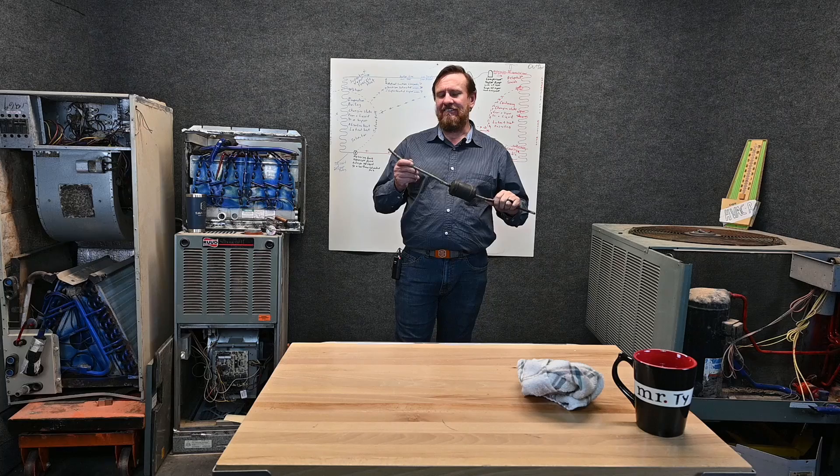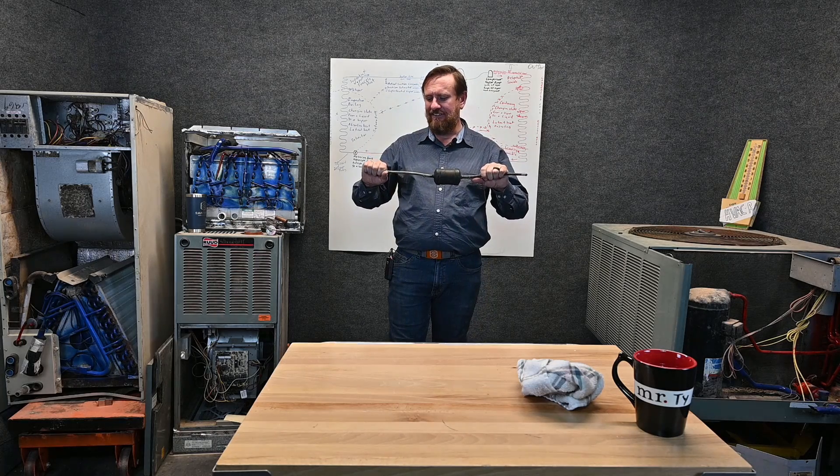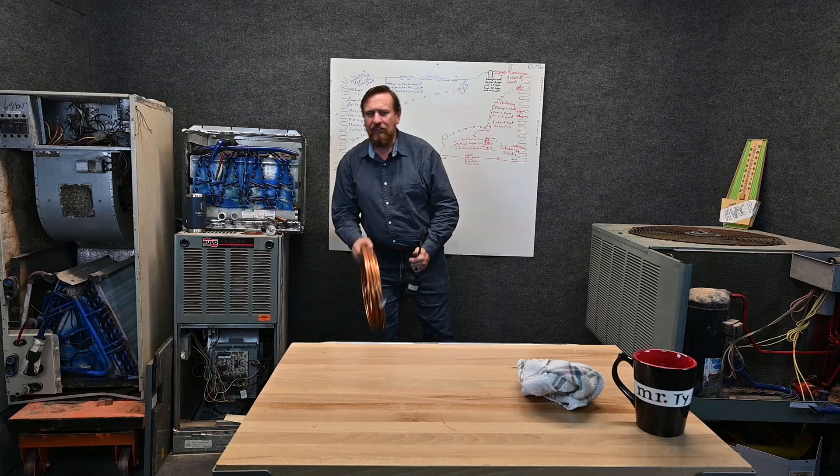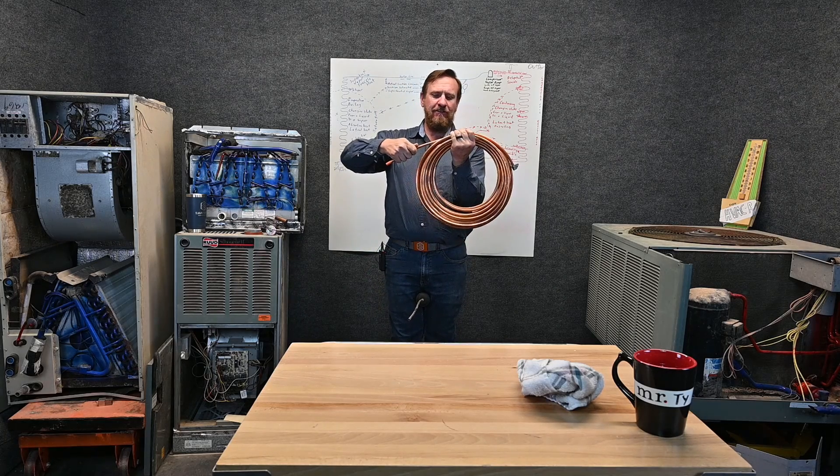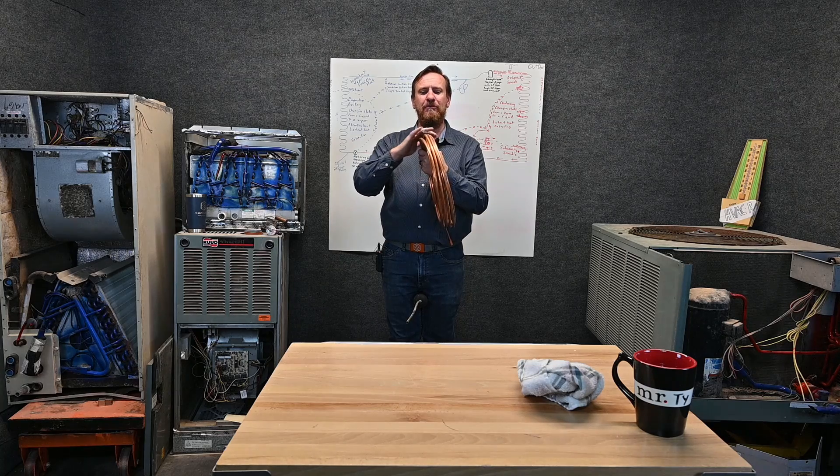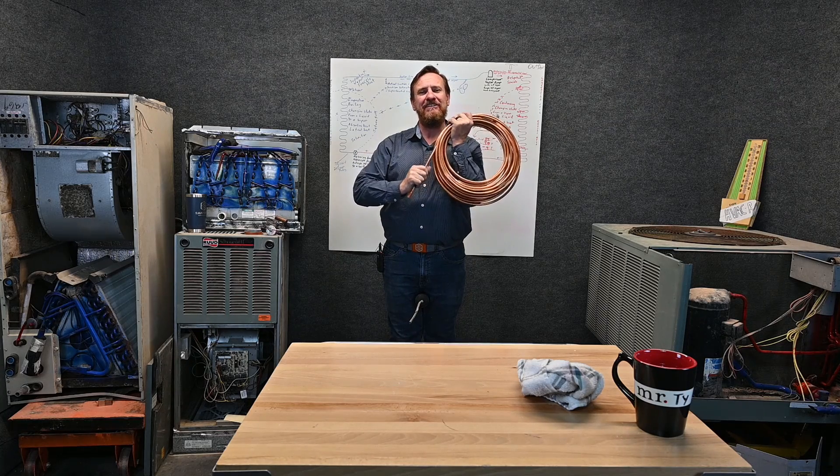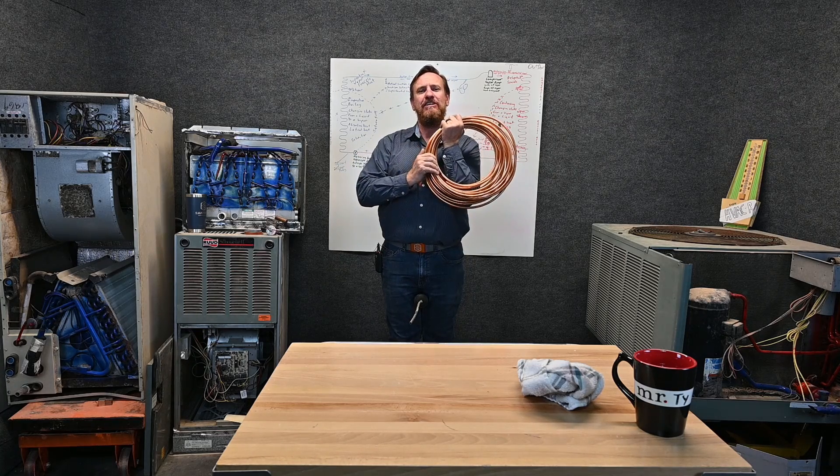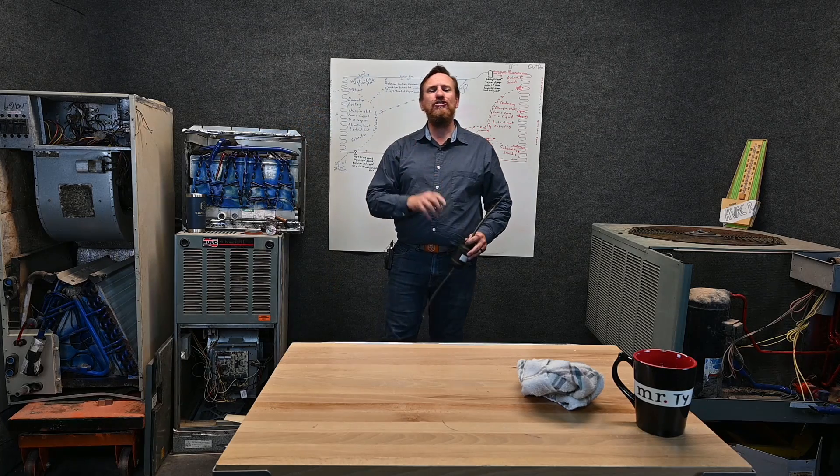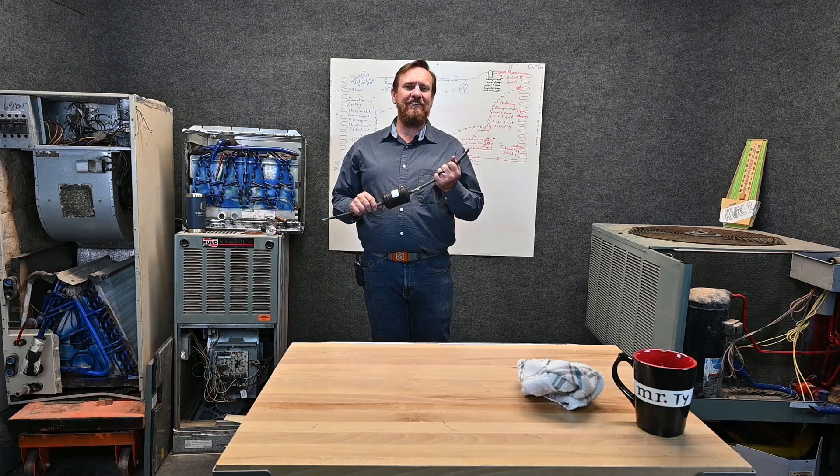Now let's talk about if this line needs insulation or not. This line is the easiest one to work with. You can usually bend it by hand. It'll usually come in a roll like this and we can work this refrigerant line very easy. We always make sure that we cap them when we're not using them so we keep this dehydrated. It is outside diameter and it is dehydrated cleaned ACR refrigeration piping. But this piping is usually not insulated because it's still giving out heat.